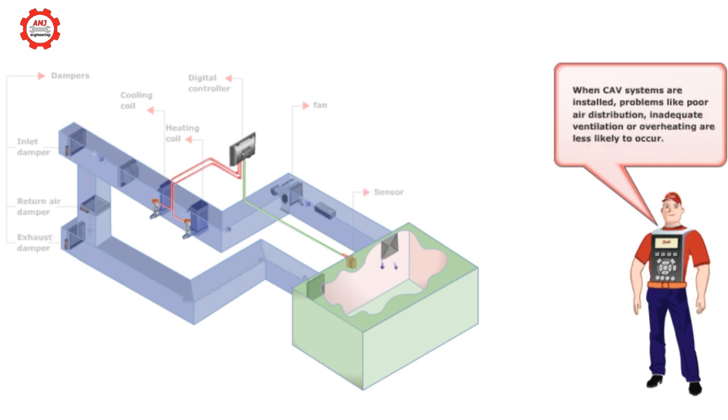When constant air volume systems are installed, problems like poor air distribution, inadequate ventilation, or overheating are less likely to occur.